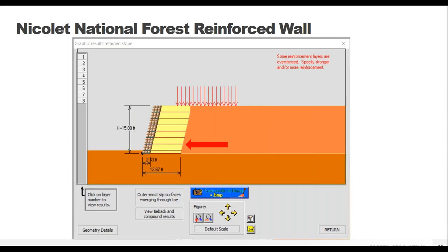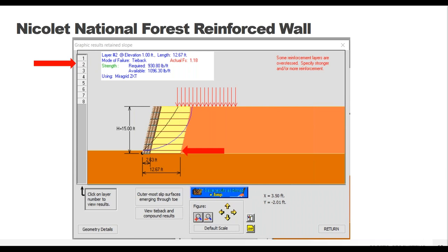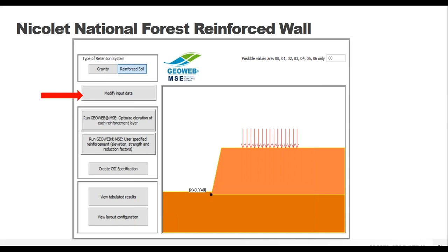We have a problem - the program has realized that some of the reinforcement layers are overstressed and may fail. To see what's happening we click on the numbers representing each geogrid layer. Clicking on layer two (note that layer one is along the bottom of the wall, not the top), we see that the factor of safety is 1.18. That's not bad, but we specified a minimum factor of safety of 1.3, so we need to go back to our inputs to change something to fix this.